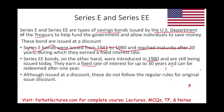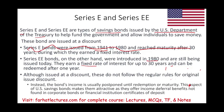Unlike the John CD example where John has to pay interest every year, for Series EE bonds income is usually postponed until redemption or maturity. That means although you are earning interest every year on the bond, you do not have to pay taxes on it annually. This aspect of U.S. savings bonds makes them attractive as they offer an income deferral benefit not found in corporate bonds or CDs from banks.